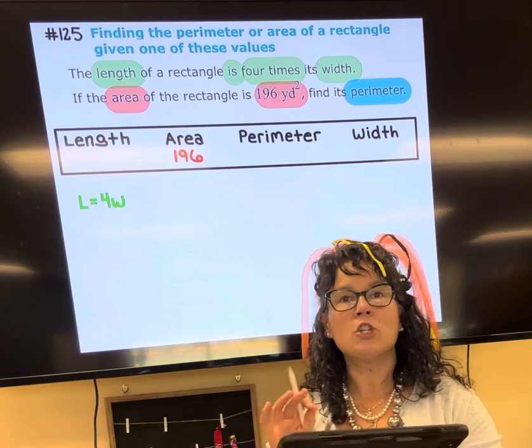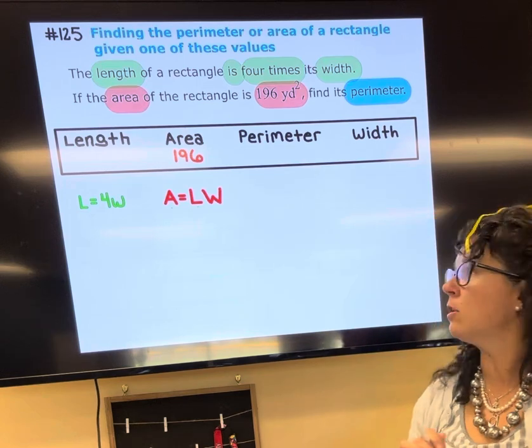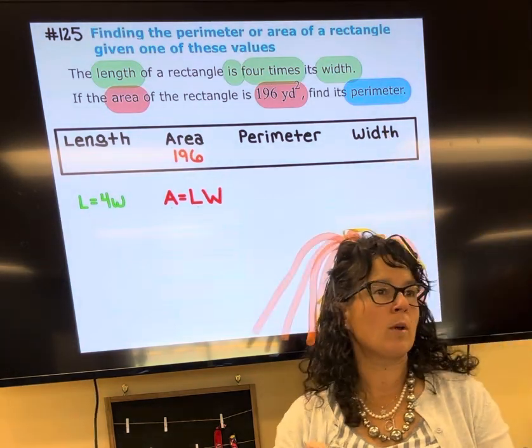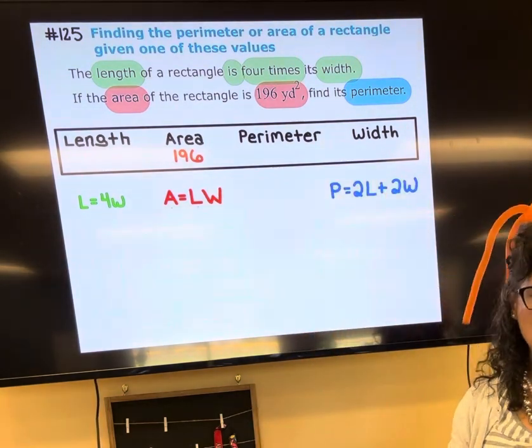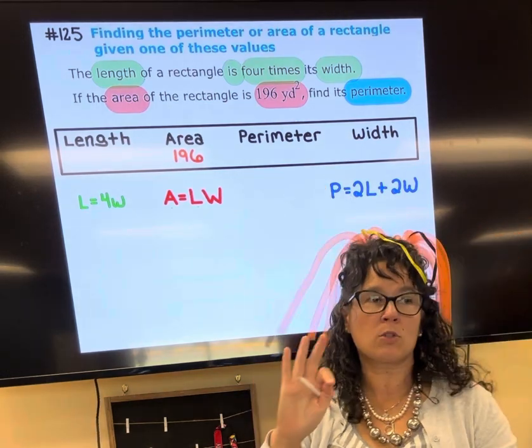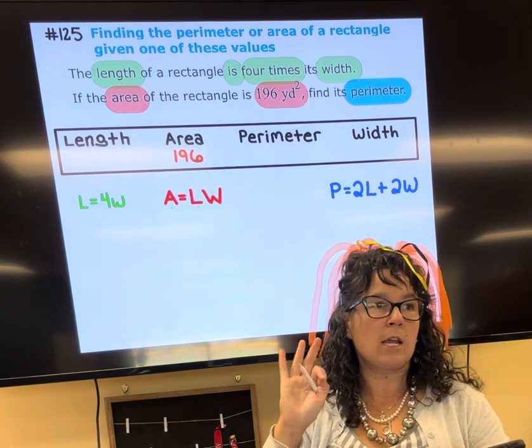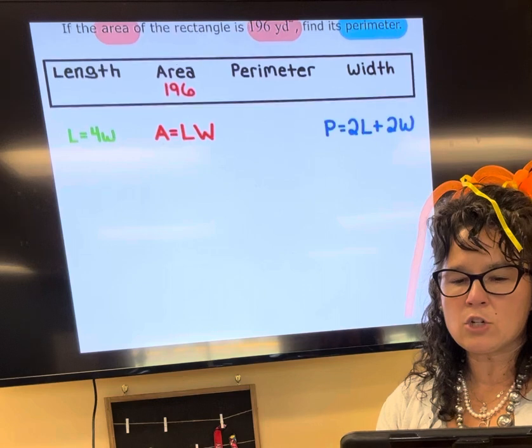Then we continue reading, and it says the area of a rectangle, so we're going to jot down the generic equation for the area of a rectangle: A equals LW. And then it continues on and says the perimeter, so I'm going to jot down the generic equation for the perimeter of a rectangle. Since there are three things we don't know, we're going to end up creating three equations.